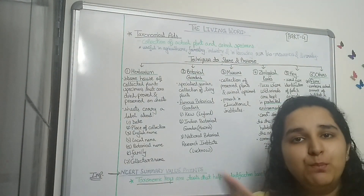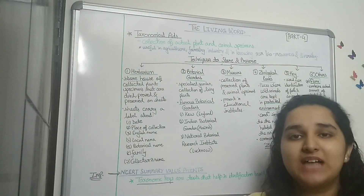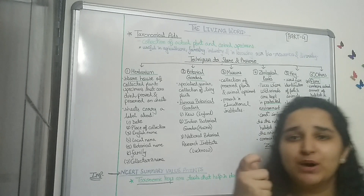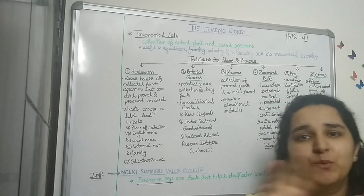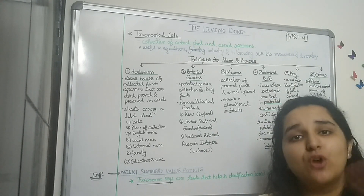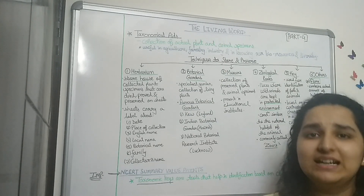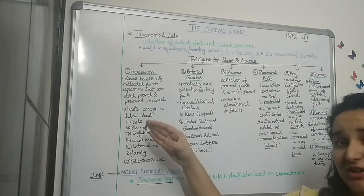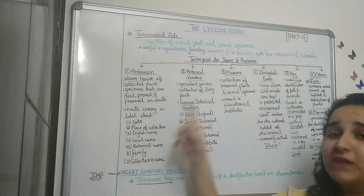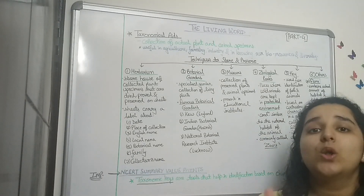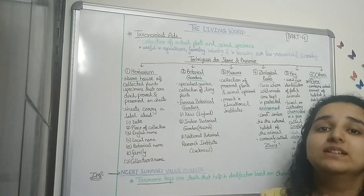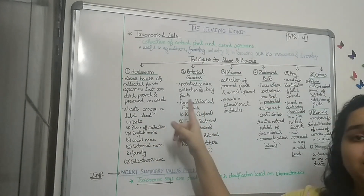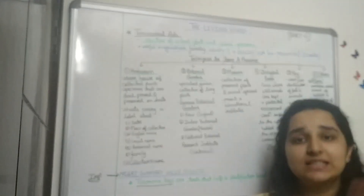To understand how plants are stored in a herbarium, think of a movie scene or real-life experience where you put a flower or leaf between the pages of a diary and press it. After months or years, you open that diary and find the plant specimen dried and pressed — that's how a herbarium works. The plant specimens are first dried, then pressed between sheets, and that is how they are preserved.